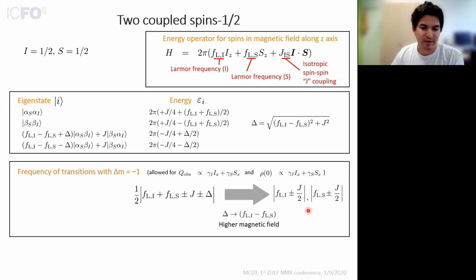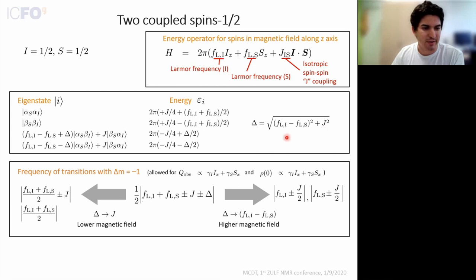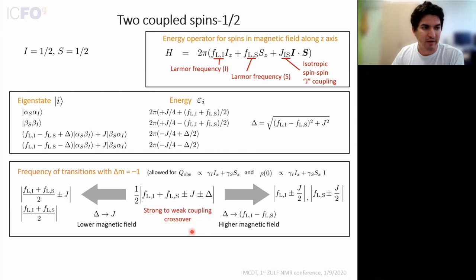In low magnetic fields, when J is larger than the difference in Larmor frequencies, we tend to the average Larmor frequency plus or minus J and the average Larmor frequency alone — these are the two possibly observable transitions. We call this the strong coupling limit, and in between is the strong-to-weak coupling crossover with a strong nonlinear dependence of frequencies with field.